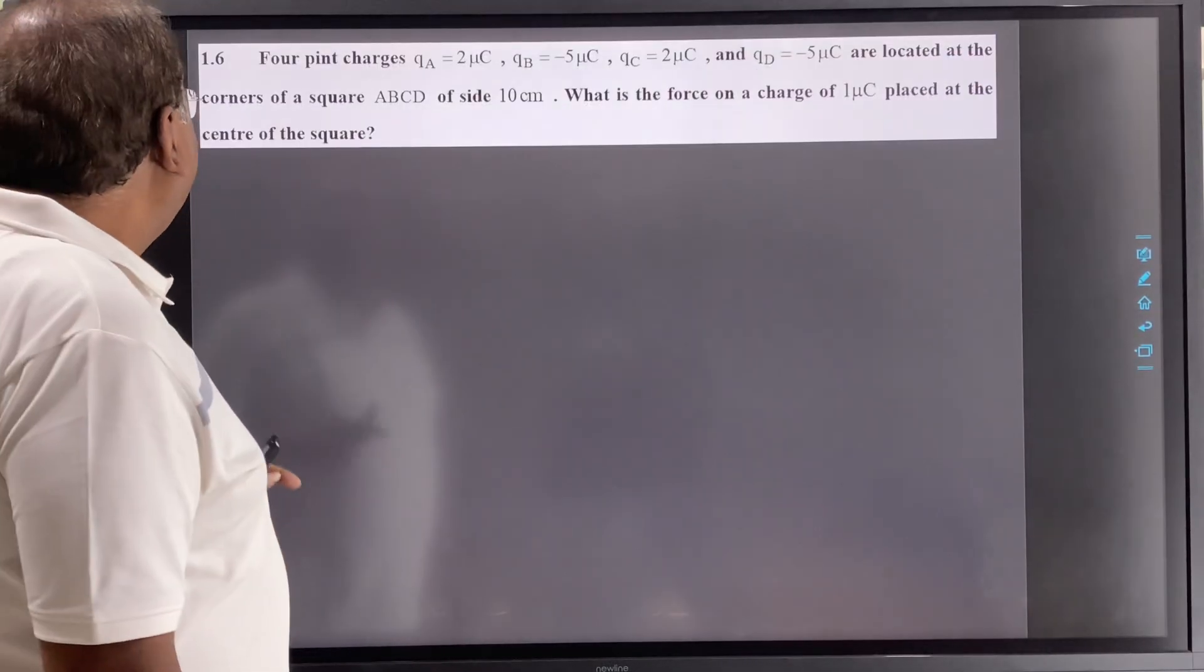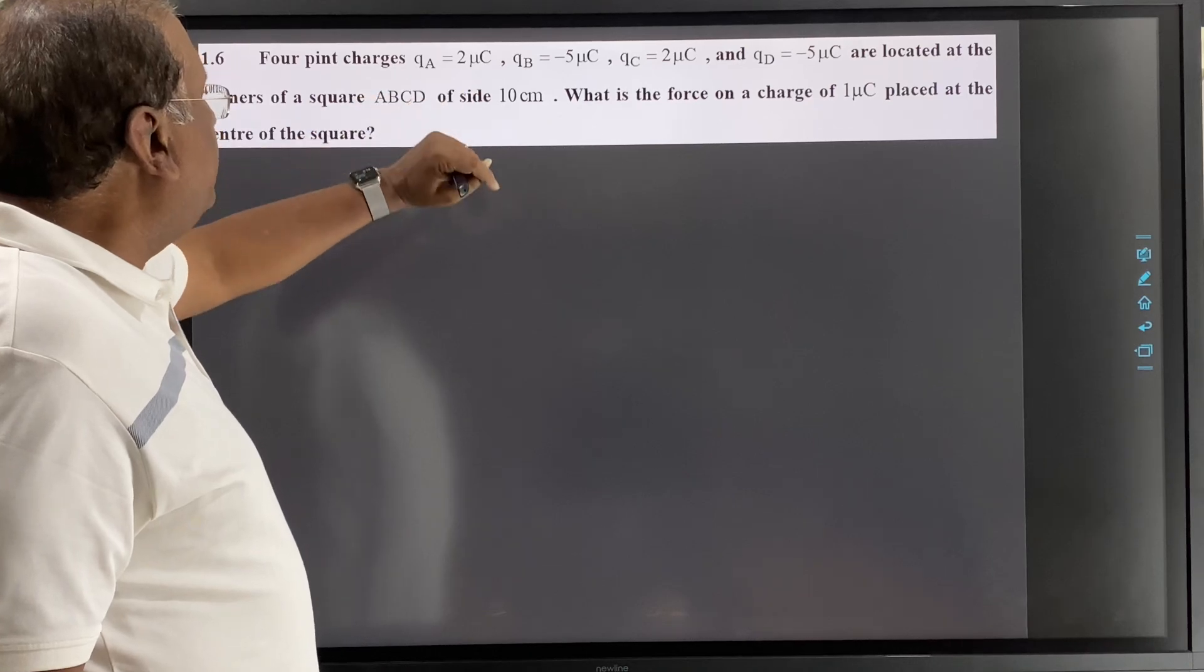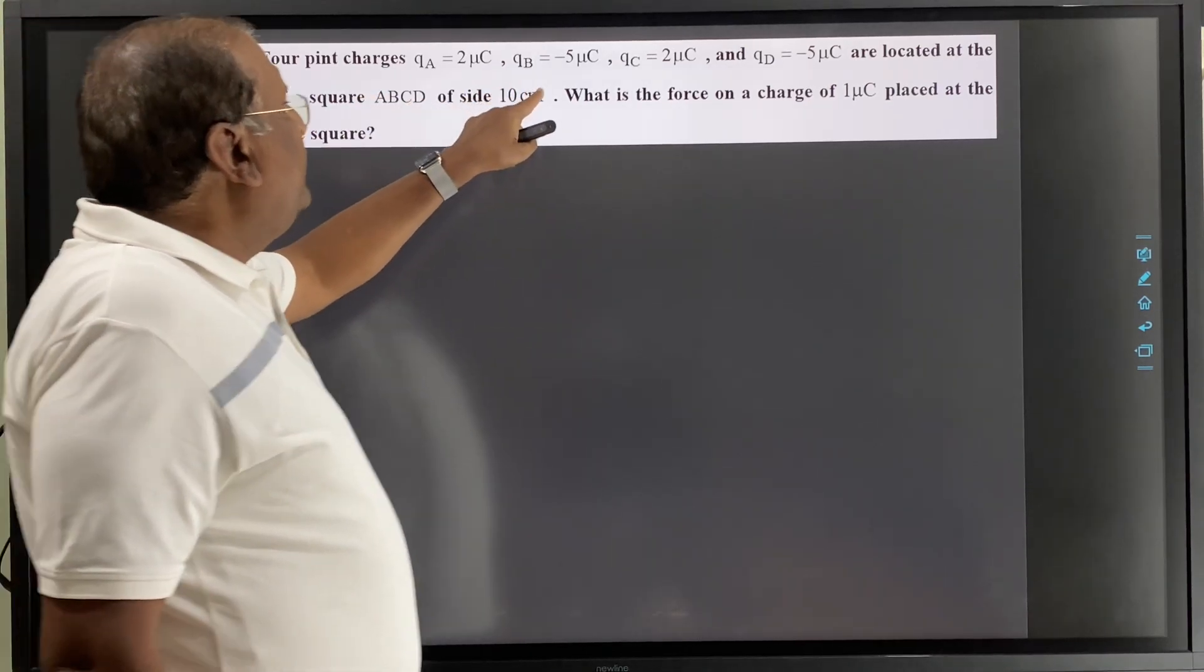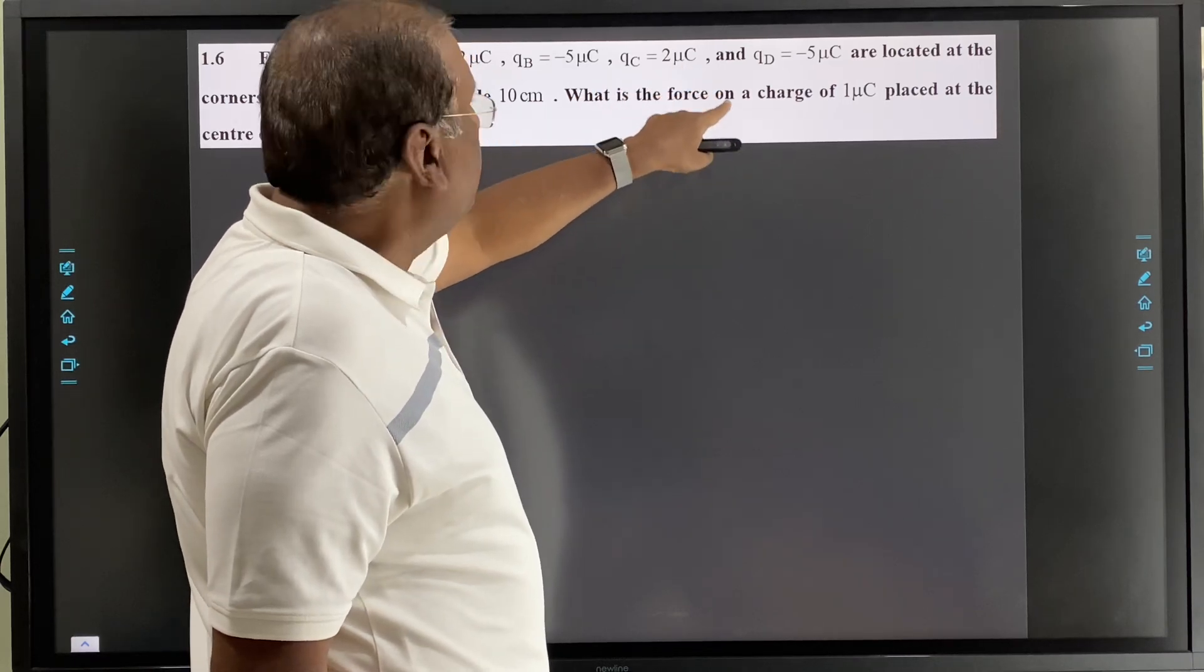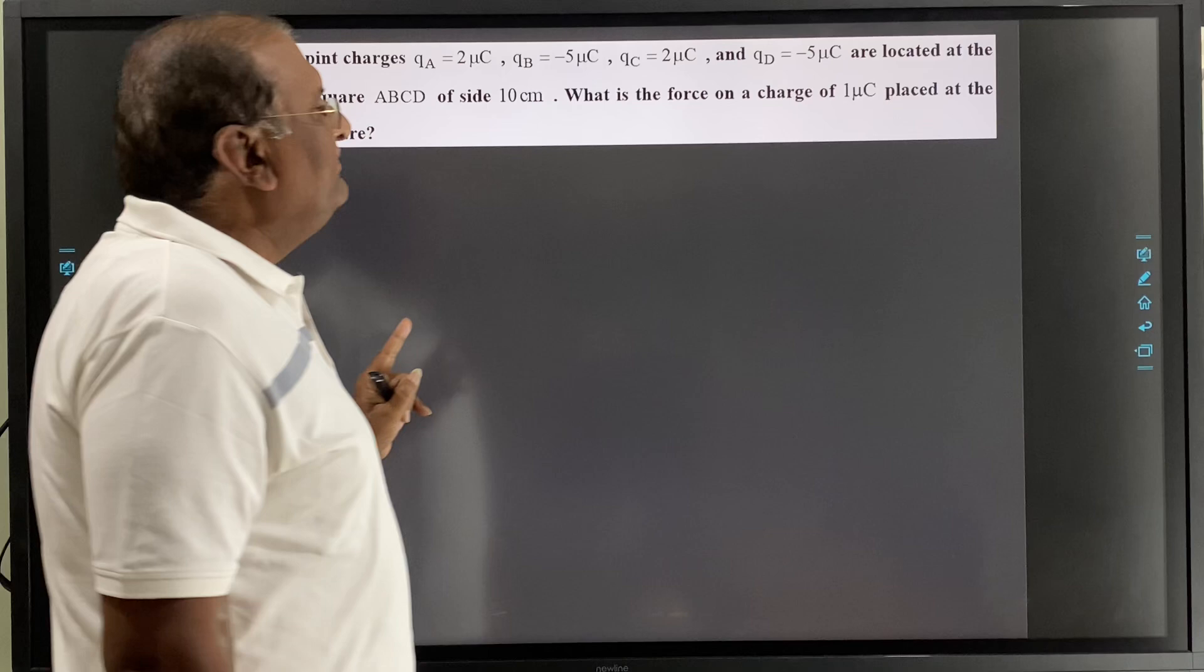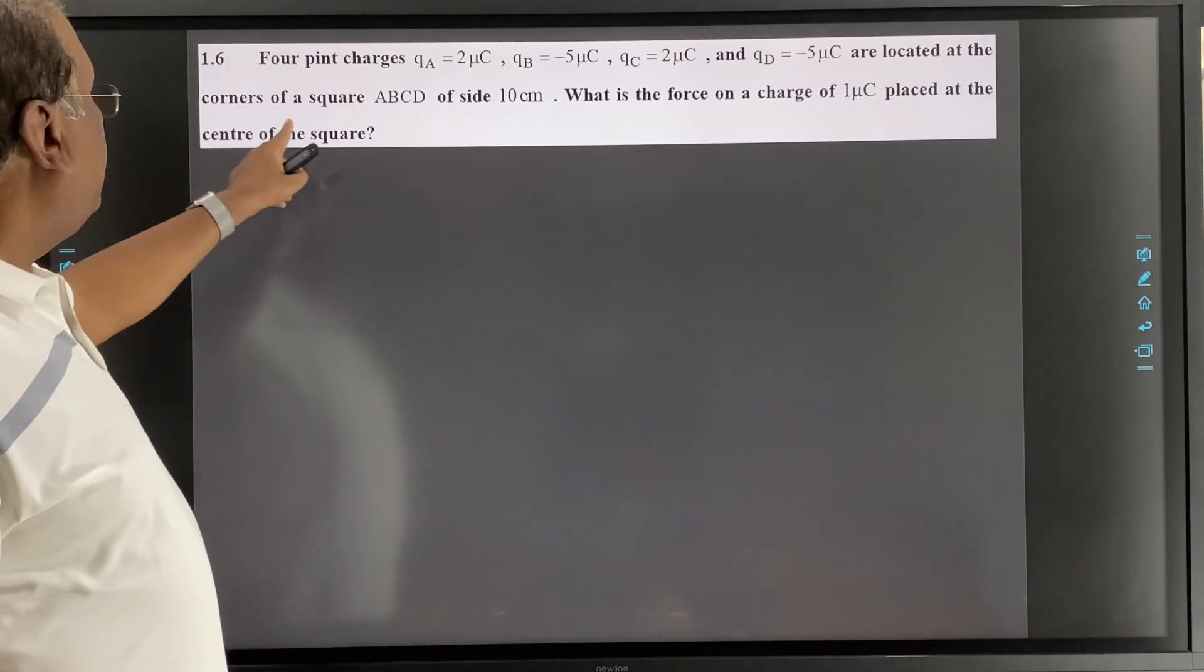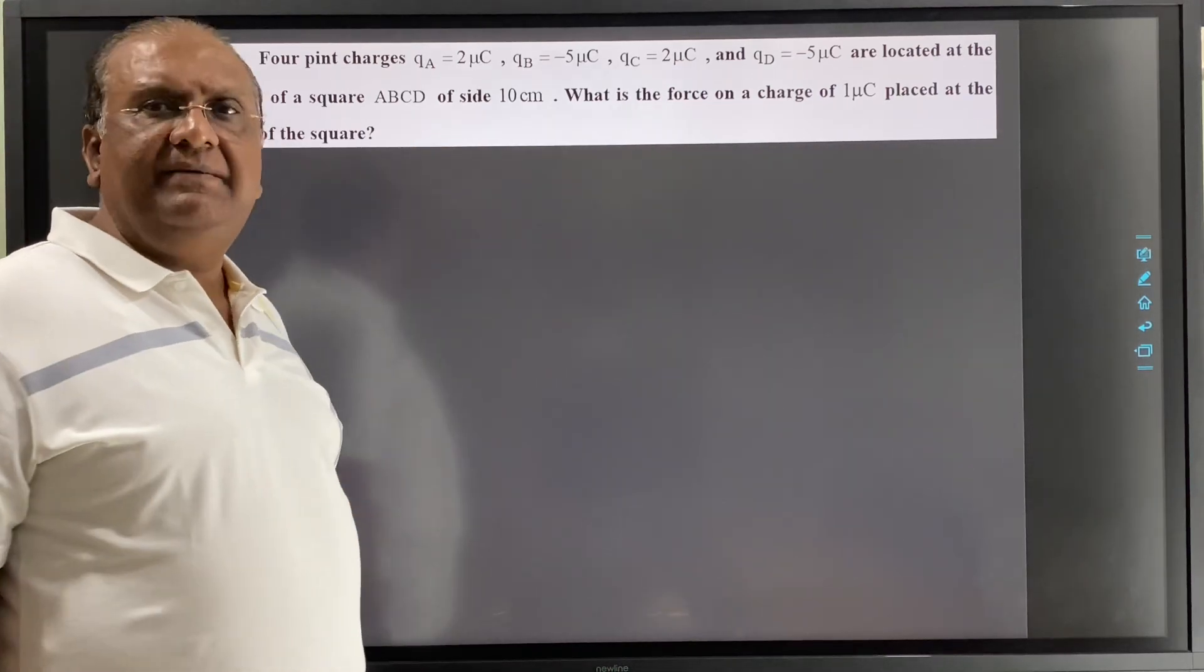Now 1.6. Four point charges: QA = 2 micro coulomb, QB = -5 micro coulomb, QC = 2 micro coulomb